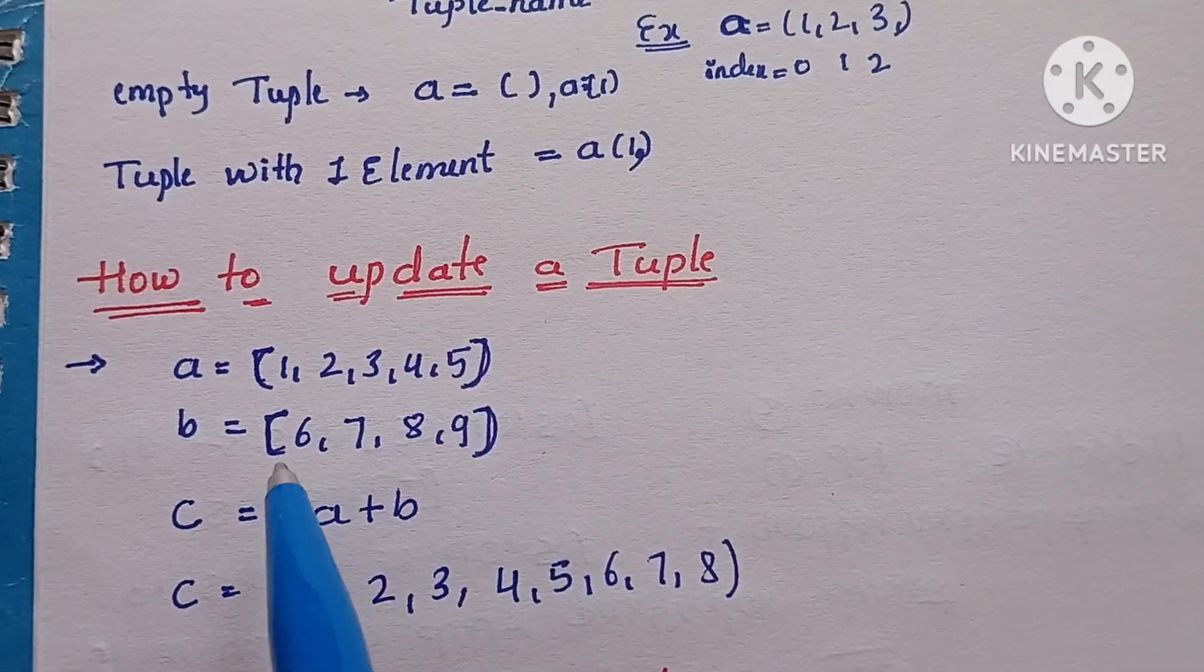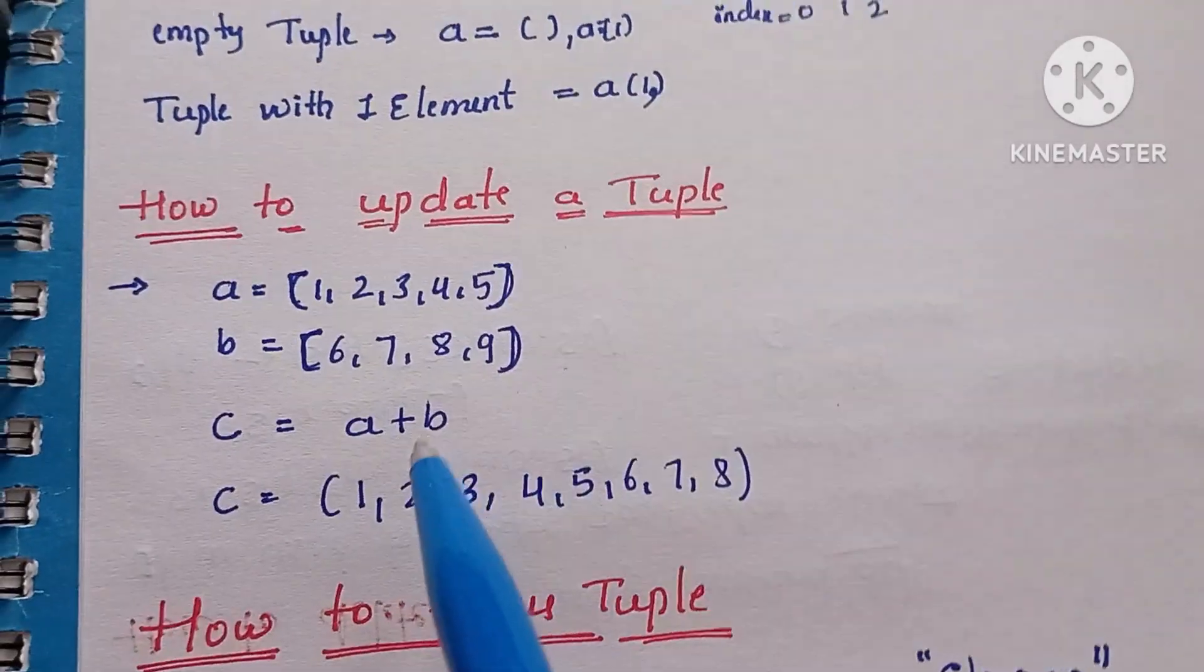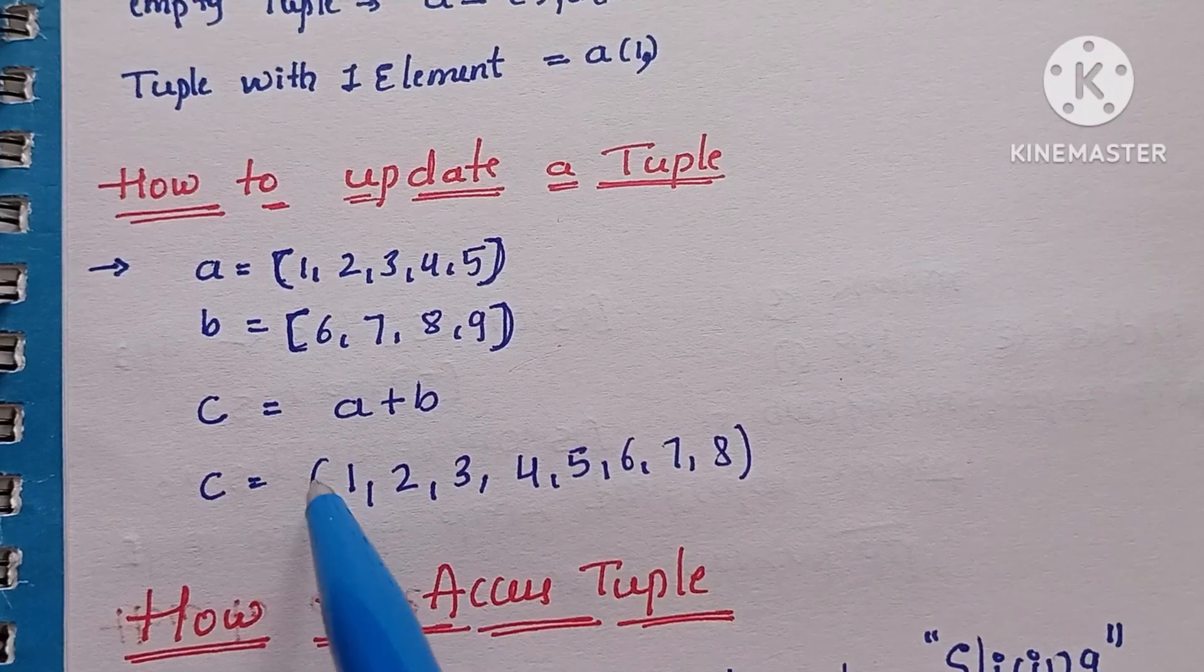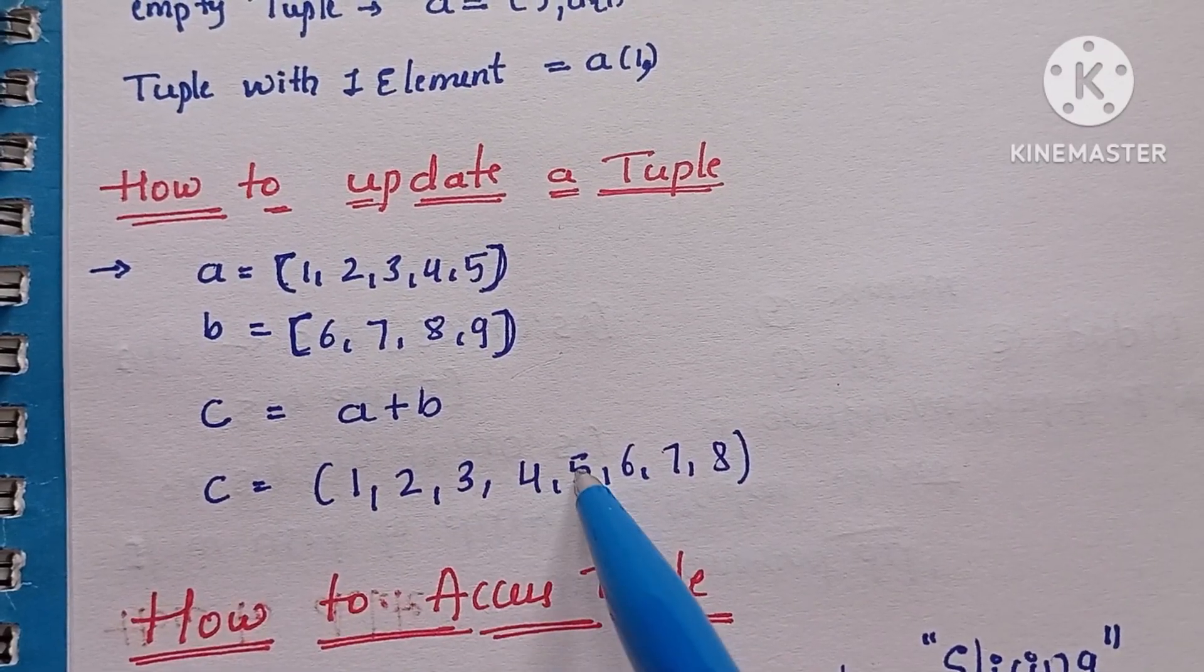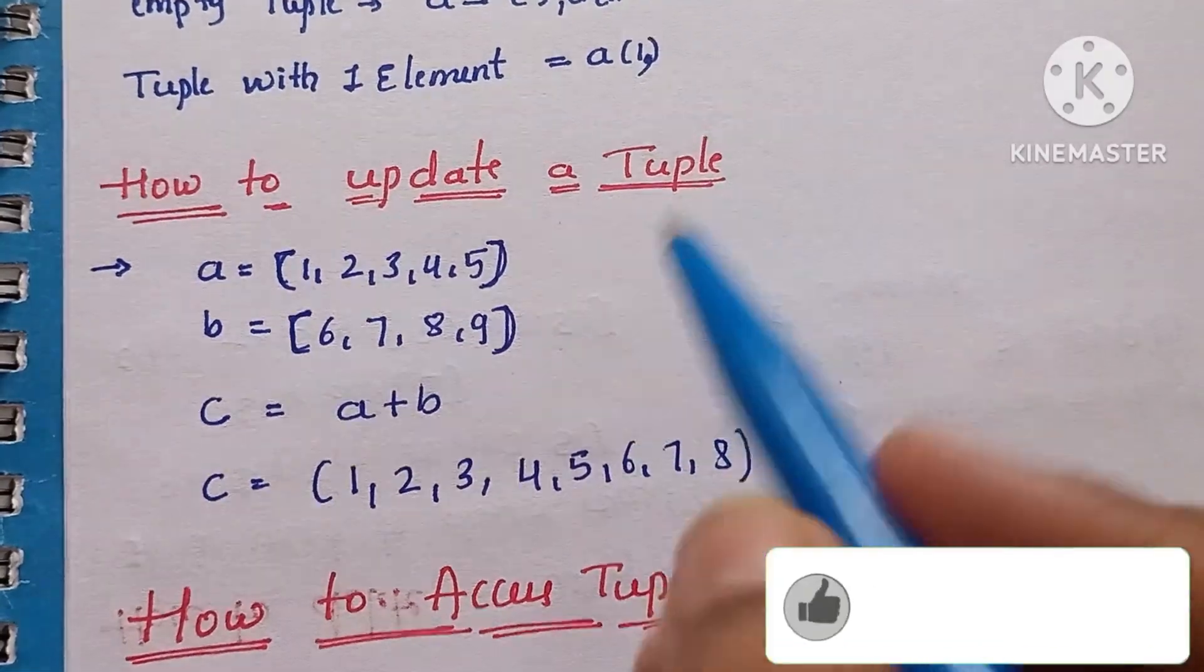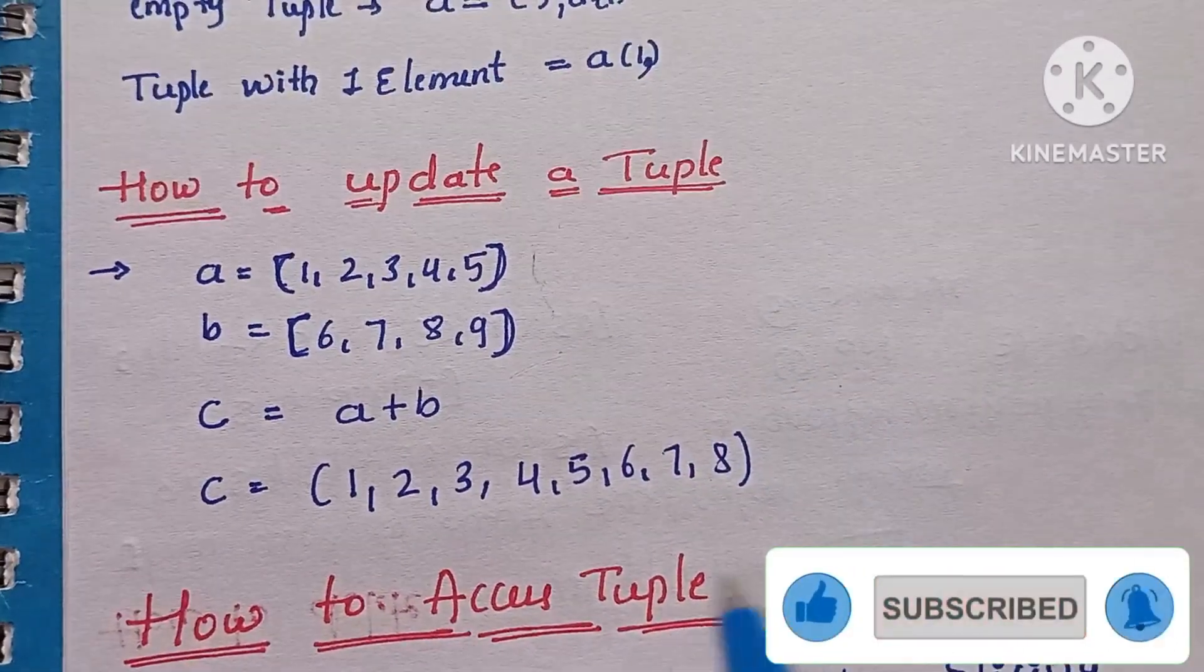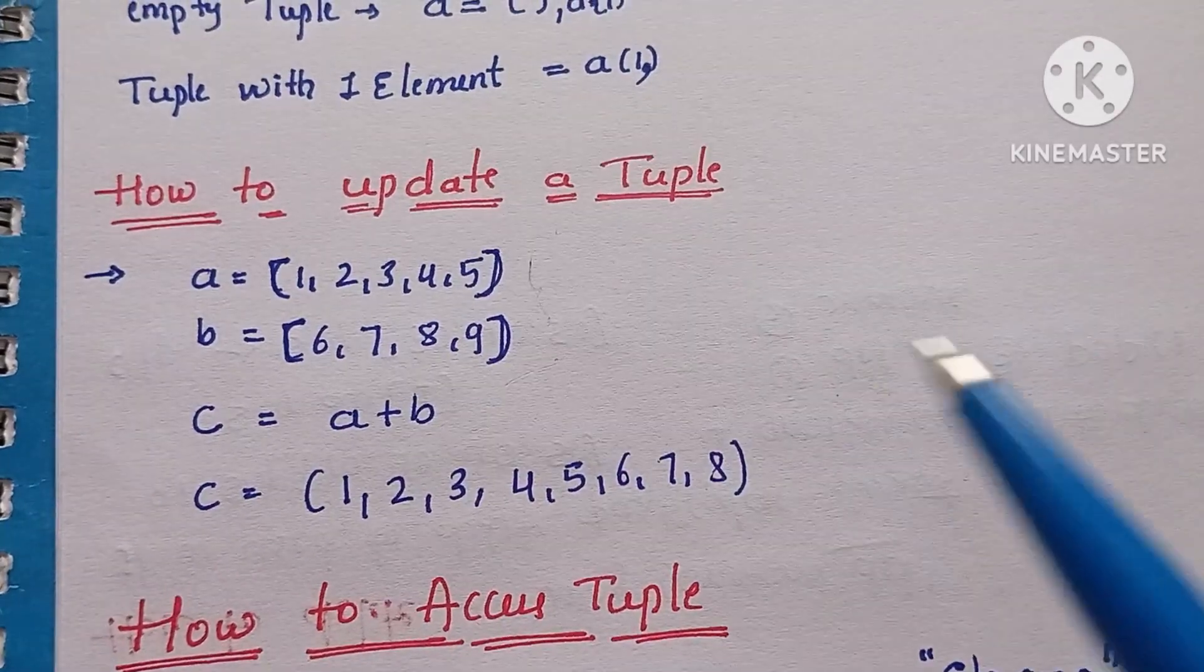b = (6, 7, 8, 9). c = a + b. So c equals (1, 2, 3, 4, 5, 6, 7, 8). So here in this case we can't add both cases. If you want to add more number of elements to the existing list, we have to use this concatenation operation.